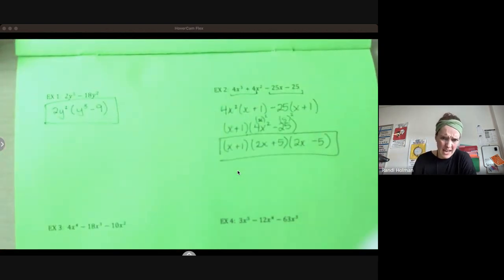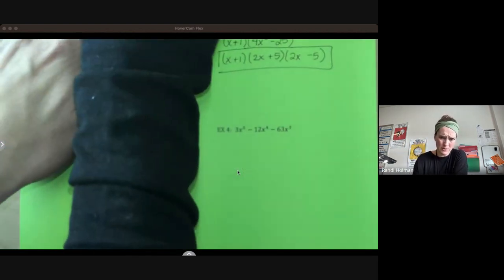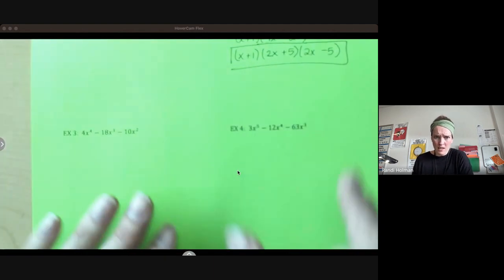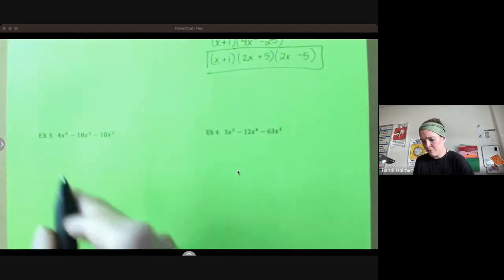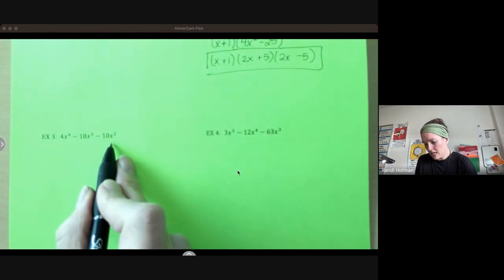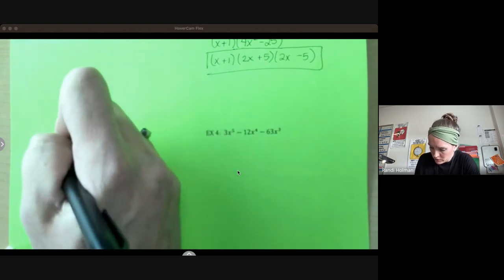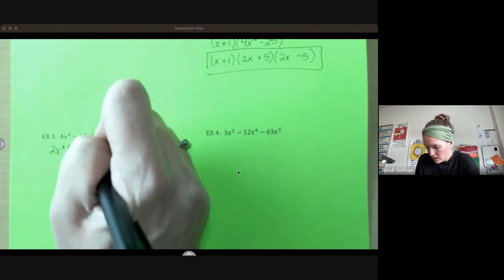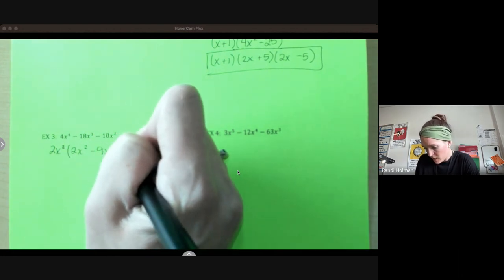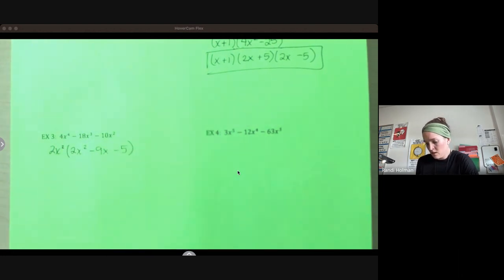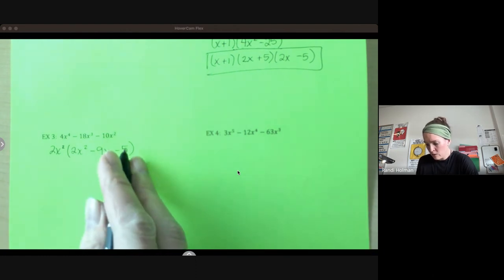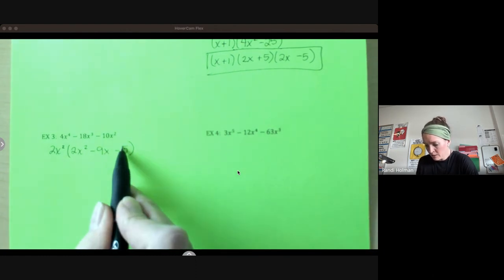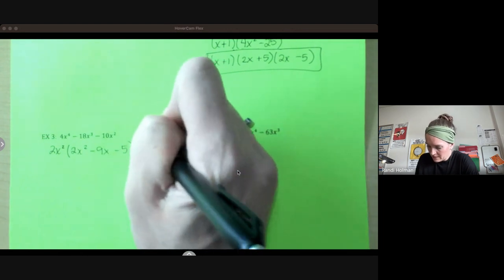Two more examples here. So we're looking at, hey, greatest common factor. 4x⁴, 18, 10x². They all have a factor of two. They all have a factor of x². So we're left with 2x²(2x² - 9x - 5). Not a perfect square trinomial. So I'm going to use ACB. Two times negative five is negative 10. Factors of negative 10 that add to be negative nine would be one and negative 10.